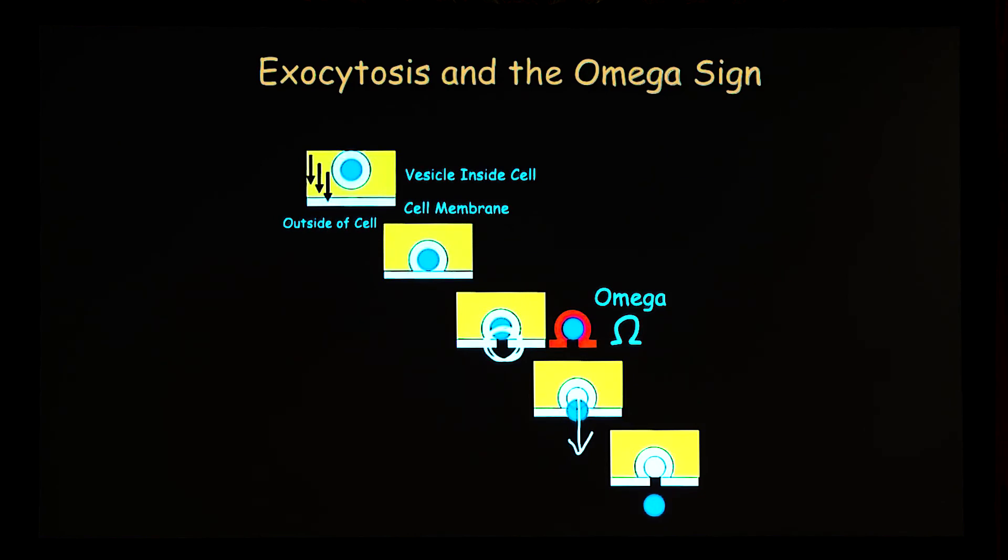If you look under an electron microscope, you can actually see these little omega signs. It means the porated vesicles that are fused with the membrane surface.